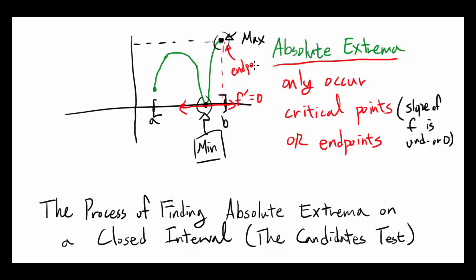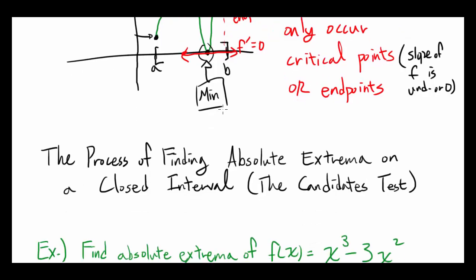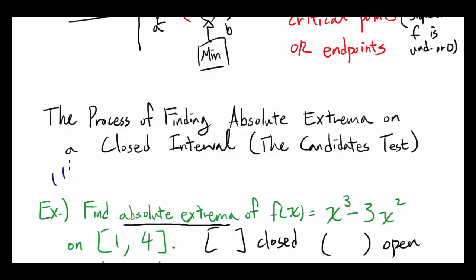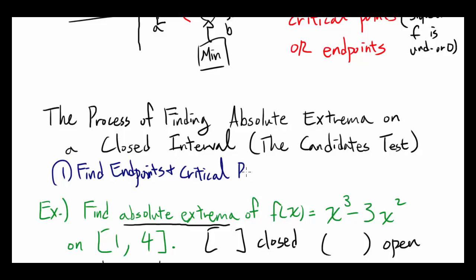That's at the endpoint. Now, obviously this other point is also a critical point where f' is zero, but as you can see, that point is neither a relative maximum nor a relative minimum. And this endpoint is neither a relative minimum nor a relative maximum. So absolute extrema can only occur at critical points or at the endpoints.